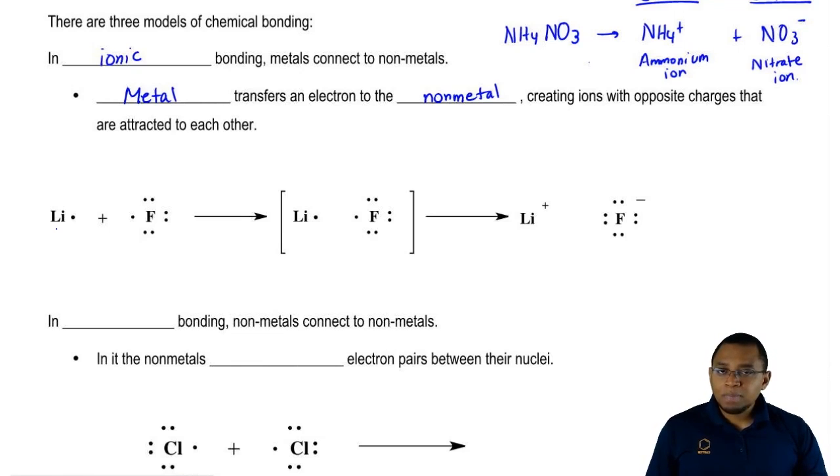We know that lithium wants to be plus one because it's in group 1A. We know fluorine wants to be negative one because it's in group 7A. What's going to happen here is lithium is then going to transfer over its electron over to the fluorine. When it transfers over its electron, it's going to be plus 1 as its charge. And then fluorine accepts that electron and becomes minus 1.